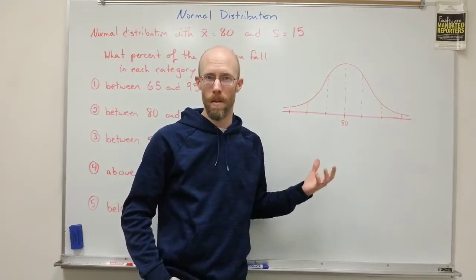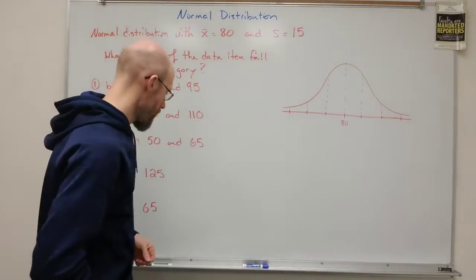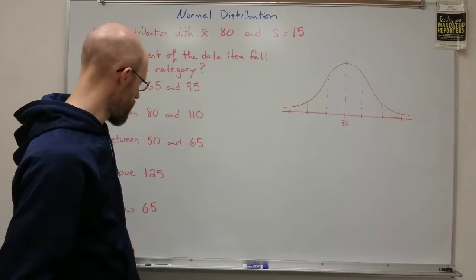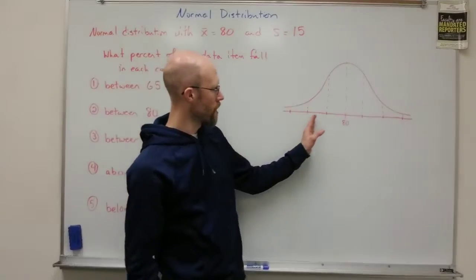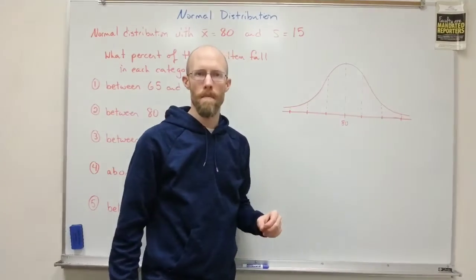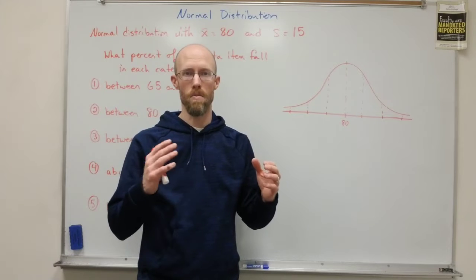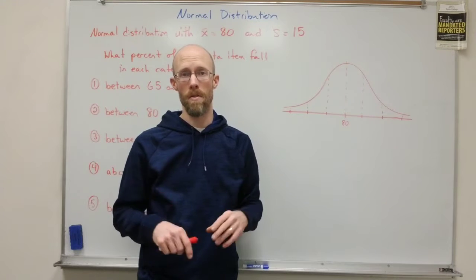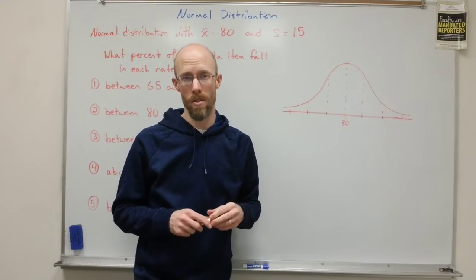So we'll assume this is the bell curve because it's a normal distribution. And what I want to do then is fill in the different points that correspond to adding and subtracting different numbers of standard deviations.